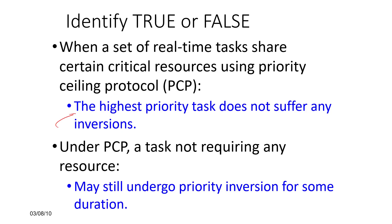Under PCP, if a task does not require any resources, still the problem may be that it will undergo priority inversion. Even if it doesn't need a resource, the priority of a low priority task could have become high because of resource dependencies and inheritance.